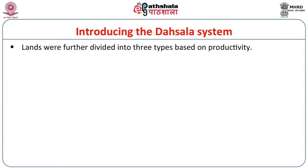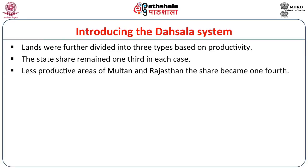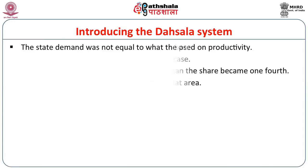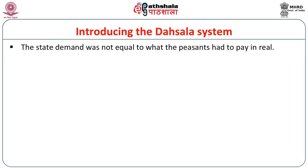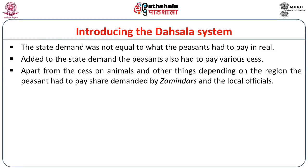Lands were further divided into three types based on productivity, and the state share remained one-third in each case. In less productive areas like Multan and Rajasthan, the share became one-fourth, and areas like Kashmir which produced saffron would give half of its produce. The state demand was not equal to what the peasants actually had to pay. Added to the state demand were various cesses levied by the state and also the demands of local or regional overlords. Apart from cesses on animals and other things depending on the region, the peasants had to pay the share demanded by zamindars and also for village maintenance.